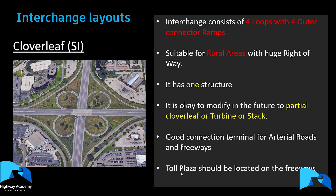A modification is the partial cloverleaf, where some loops are removed and direct connecting ramps are introduced. It's suitable where there are large rights-of-way, and in the future it can be modified to a turbine or a stack. Toll plazas are located on the freeway. It reduces the right-of-way needed compared to the full cloverleaf.